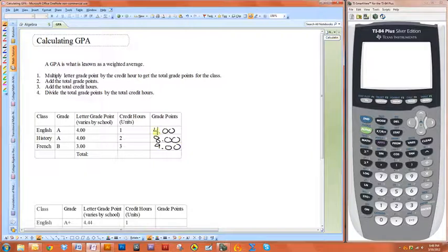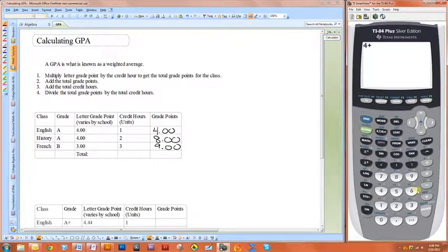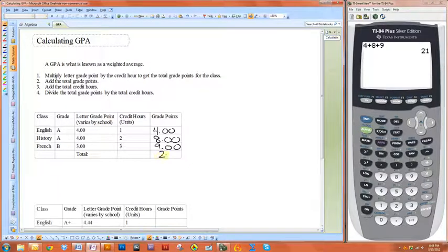Then you simply add all of these up. So you do four plus eight plus nine. So you get a total of 21 grade points for this semester, and you have to add up all the total credit hours, so that's a total of six.